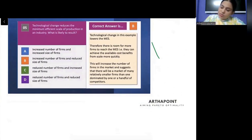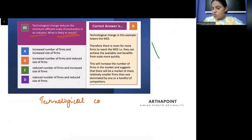Come to the next question. Technological change reduces the minimum efficient scale of production in an industry. What is the likely result? Technological change is always related to reducing the cost. Whenever there will be technological change, it will be able to reduce the cost.